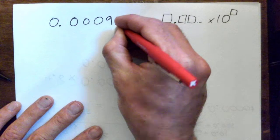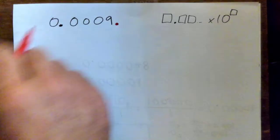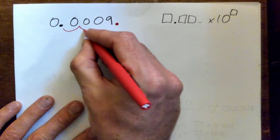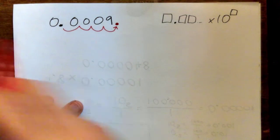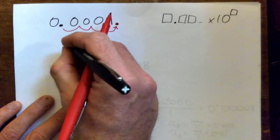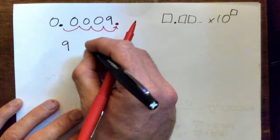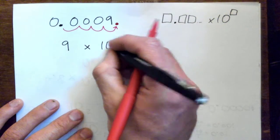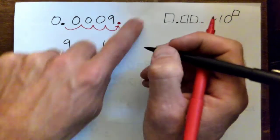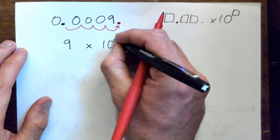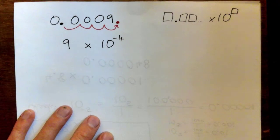The decimal is here at the moment, so we have to move it over — one, two, three, four spaces. The number becomes 9.0, or just 9, times 10 to the power of either 4 or negative 4. Since this is a small number, it's got to be one of the negative powers of 10.